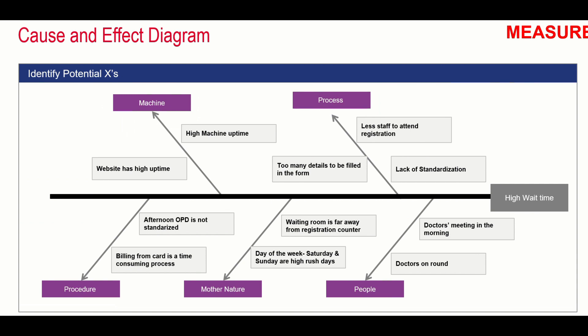Then the team did a cause and effect diagram. This was a brainstorming session with which they were able to identify different causes of high wait time. Under people, the doctors are on rounds or in morning meetings, which causes them to start late, leading to huge wait time. Under process, they had too many details to be filled in the form, less staff to attend registration, and lack of standardization as causes.